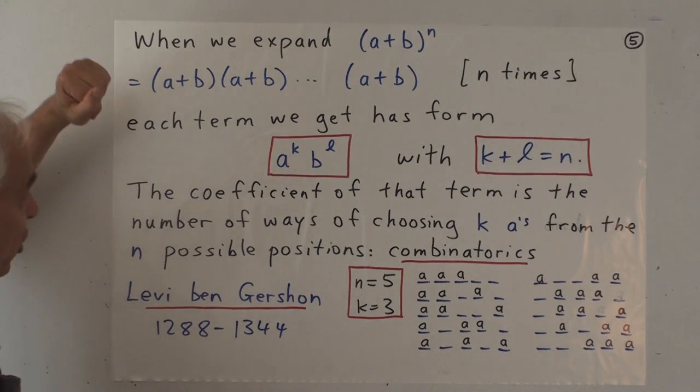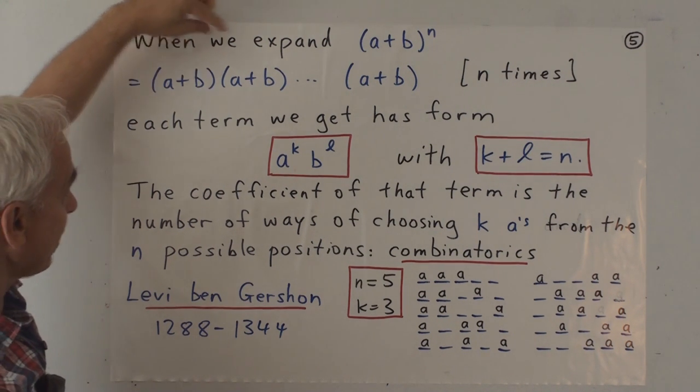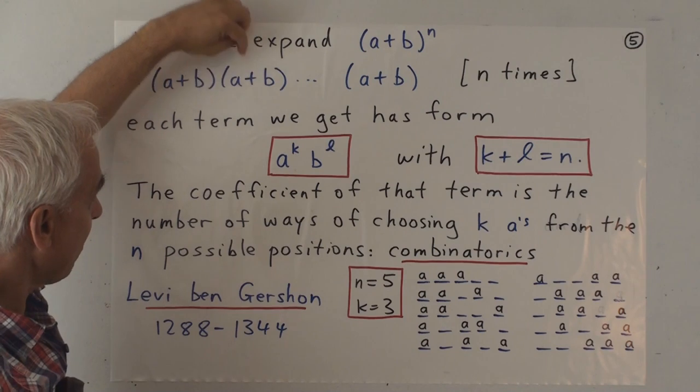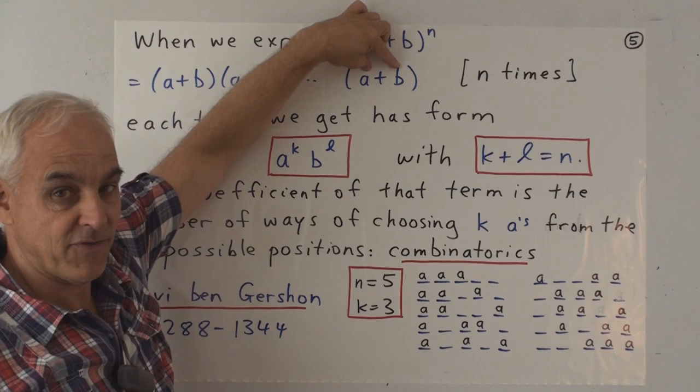And when we do that using the distributive law, well, we get a number of terms. And each term we get is obtained by taking one of these two elements, multiplied by one of these two elements, multiplied by one of the next two elements, and so on, all the way up to one of these two elements.